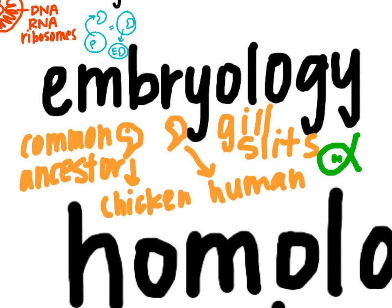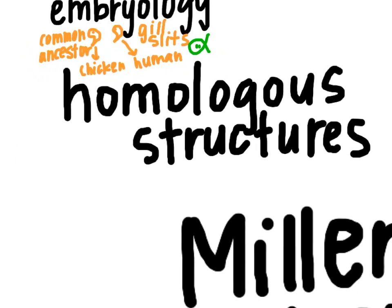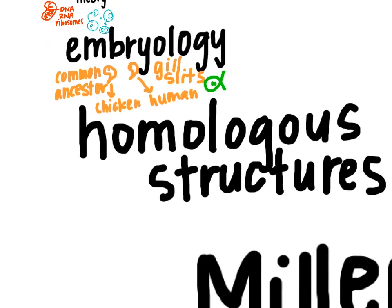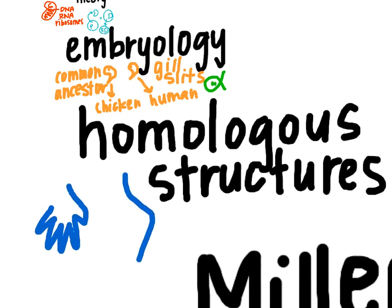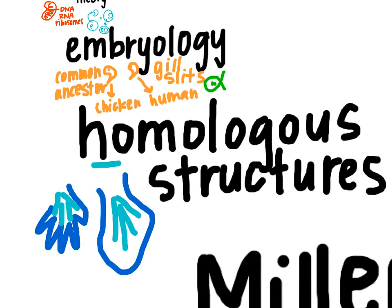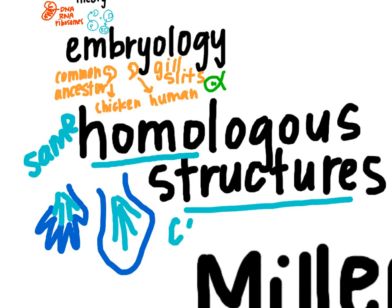The next one is homology, or homologous structures. Homologous structures are things like our hand compared with a whale's flipper. At first they seem very different, but if you look at the bones inside of them, there are actually a lot of similarities — you can pick out a similar bone structure inside both. Because we have similar structures — 'homo' meaning the same — that means we must have come from a common ancestor.